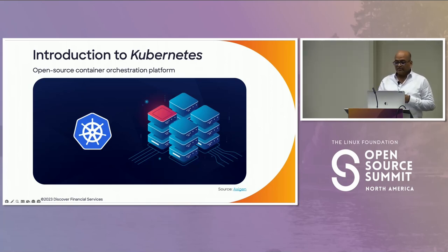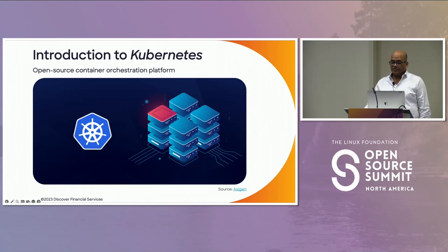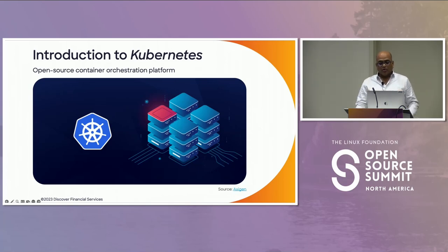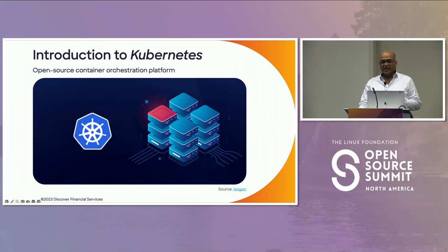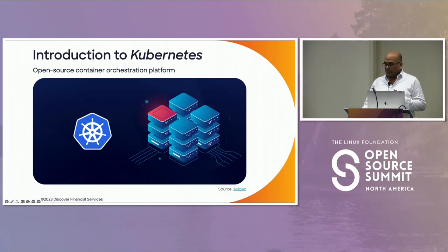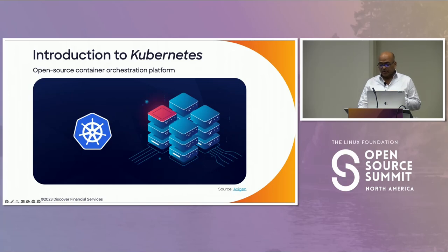Kubernetes is extensively used in production environments to handle containers. As businesses continue to adopt cloud-native architectures, the need for scalable, reliable, and manageable application delivery processes becomes increasingly important. Kubernetes is a powerful platform for managing containerized microservices at scale. It allows teams to focus on building and delivering high-quality applications faster, and because it can work anywhere with any container on various infrastructures, you can use the same approach whether hosting on your laptop, on-prem data centers, private hybrid cloud, or any public cloud provider.